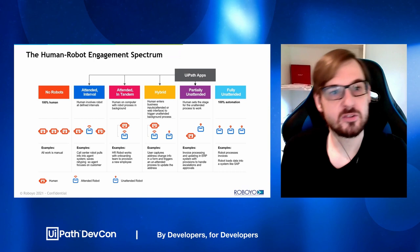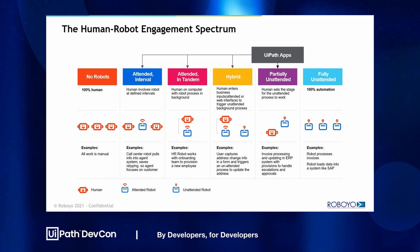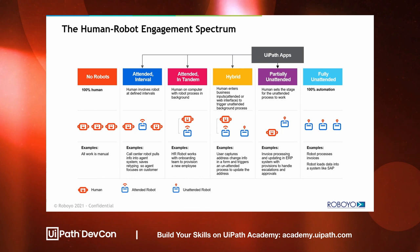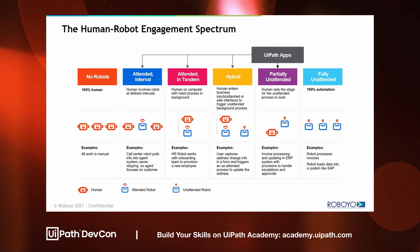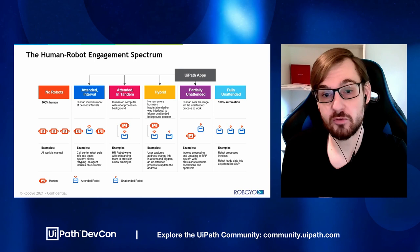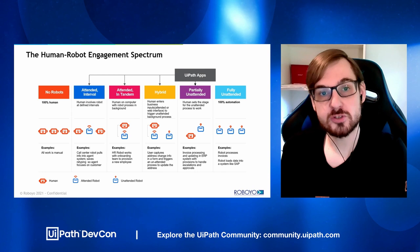Going deeper into the human-robot engagement spectrum, Apps can be used in almost every facet. We have an attended robot with an interval where the human is involved — this can be beautifully done via Apps integrating with a task or form. Then attended in tandem, where the human works with a robot process in the background — essentially what we're doing with the orchestrator dashboard, where I as a human work with the dashboard while the robot processes and retrieves data. There's also hybrid deployment, where human inputs trigger an unattended process, and partially unattended, where a human sets the stage via file upload within an App.